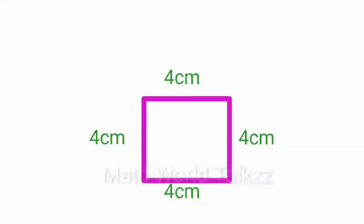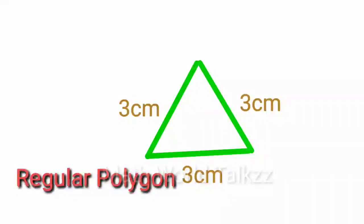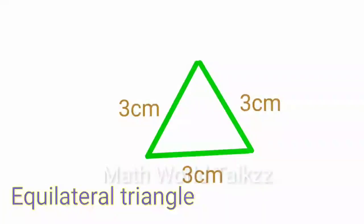So there are special names for some regular polygons. For example, if all sides are equal in a triangle, it is a regular polygon. We can also call it an equilateral triangle.